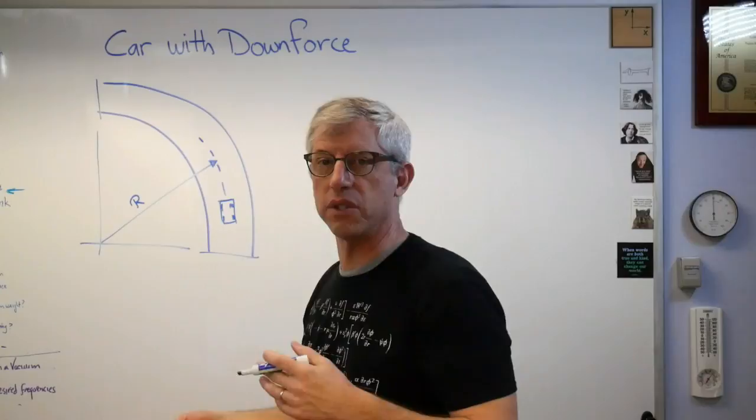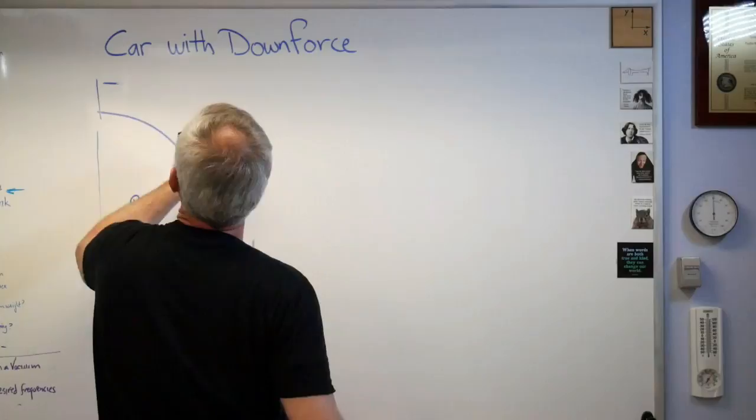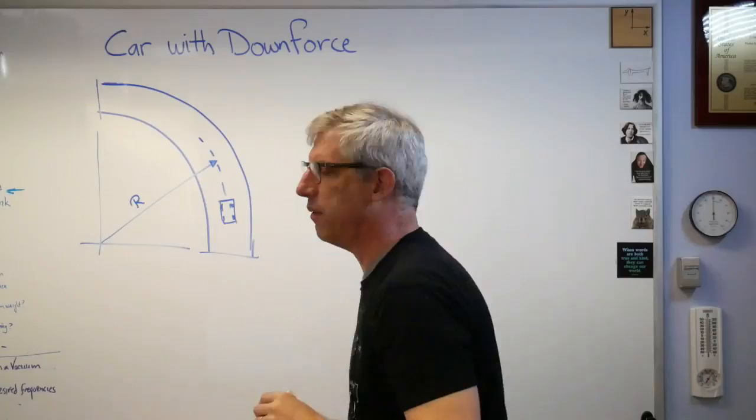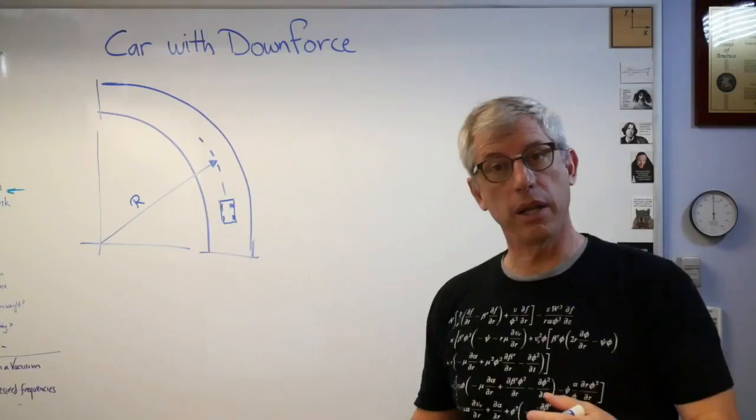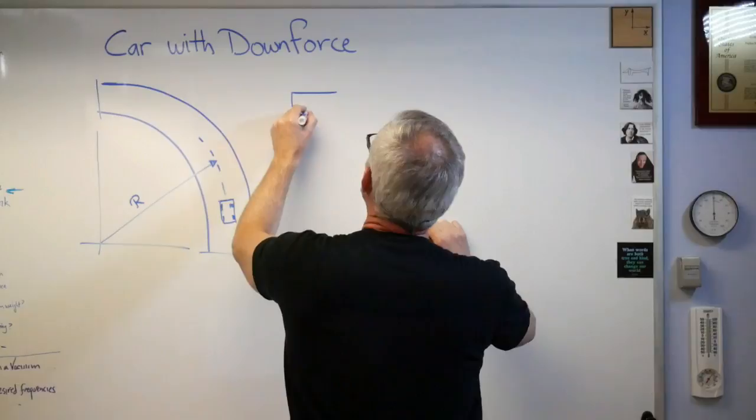We've got a radius there. So here's the deal: car's going around the turn. For simplicity, let's assume it's turning to the left. Let's take a look at what forces are letting the car go through the turn.